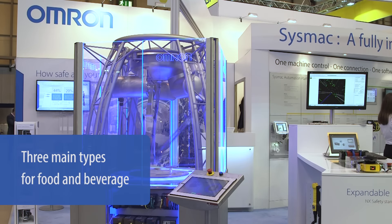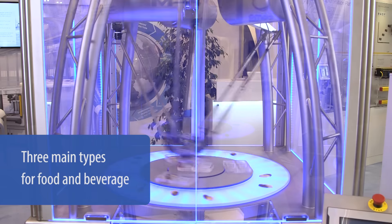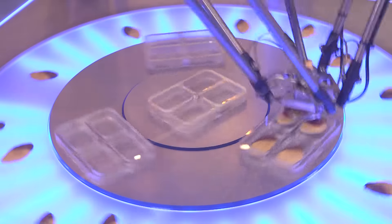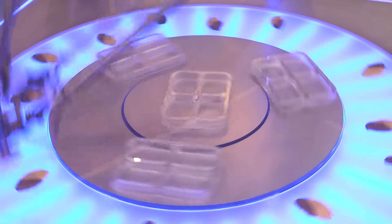Delta robots are ideal for high-speed pick-and-place projects, where depending upon the application, over 120 picks per minute can be realized.